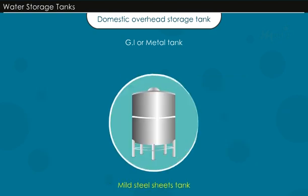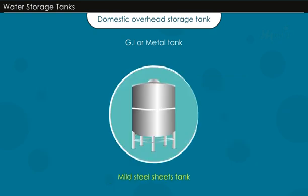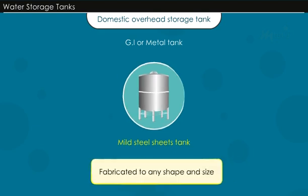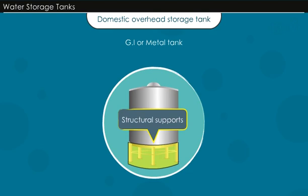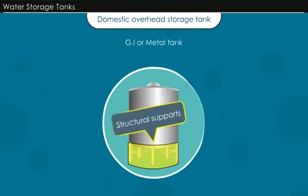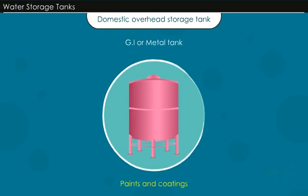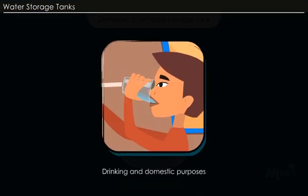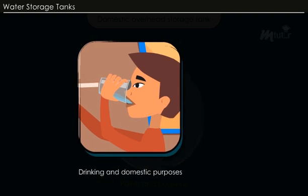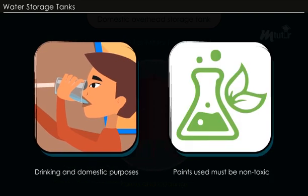Metal tanks using mild steel sheets can be fabricated to any shape and size with suitable structural supports. The inside and outside surfaces of such tanks are protected against corrosion using suitable paints and coatings. For tanks holding water used for drinking and domestic purposes, non-toxic paints must be used.